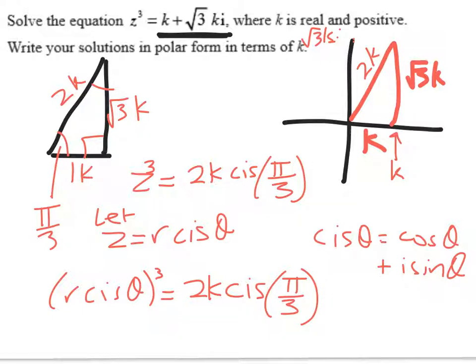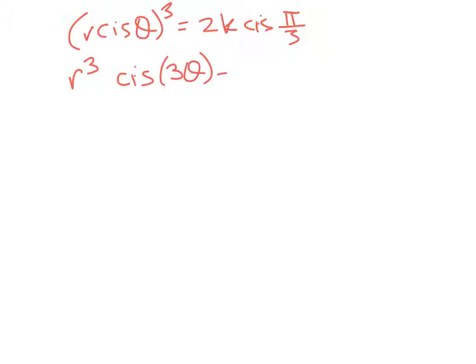So, r cis theta cubed is equal to 2k cis(π/3). So, I'm going to go on to a new slide, but at this stage, you should pause and apply De Moivre's theorem, and this is a pretty straightforward merit question. So r cis theta cubed equals 2k cis(π/3). We can rewrite the left-hand side as r³ cis(3θ), and that equals 2k cis(π/3). And we're doing that by De Moivre's theorem.